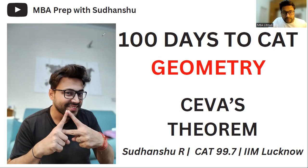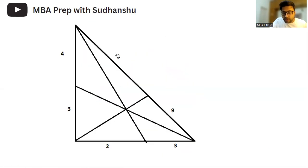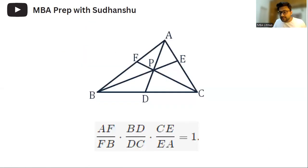Let us understand what is a Cevian. For example, I'm sure you've heard of medians, right? You've heard of medians, you've heard of angle bisectors. They're all types of Cevians. What is a Cevian? Any line when you draw from a vertex to the opposite side is called a Cevian.